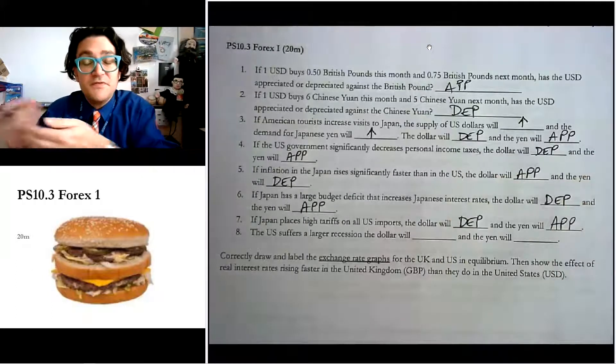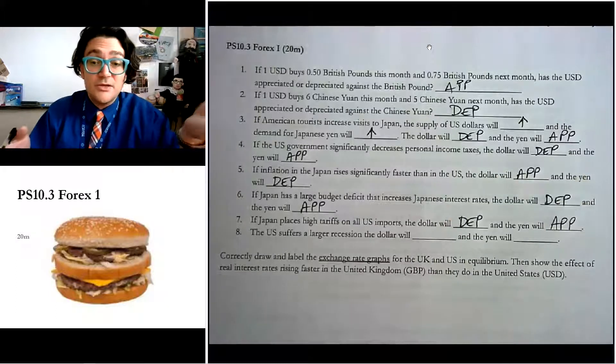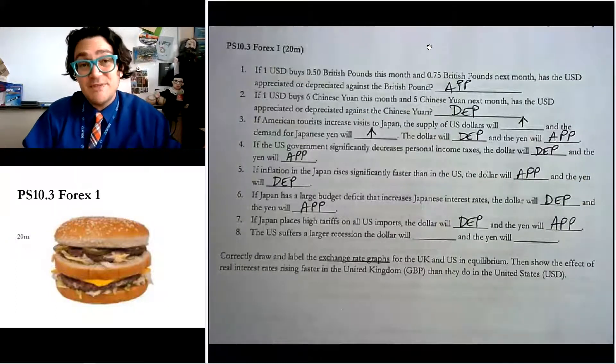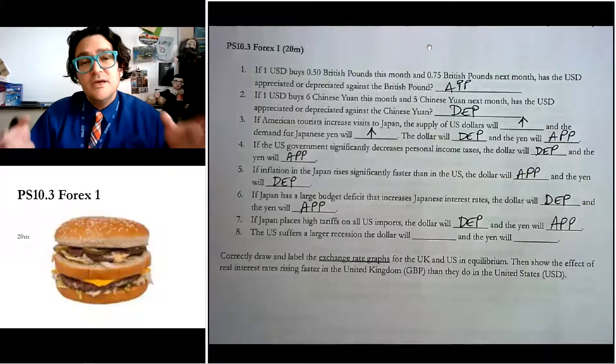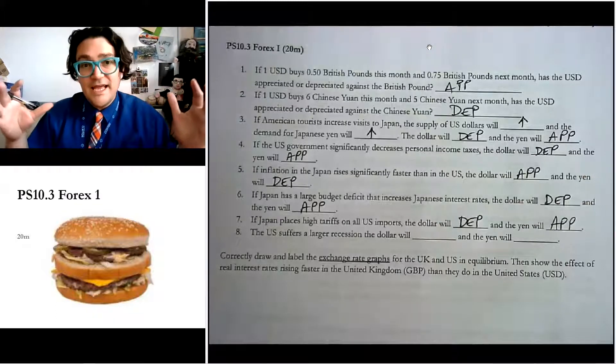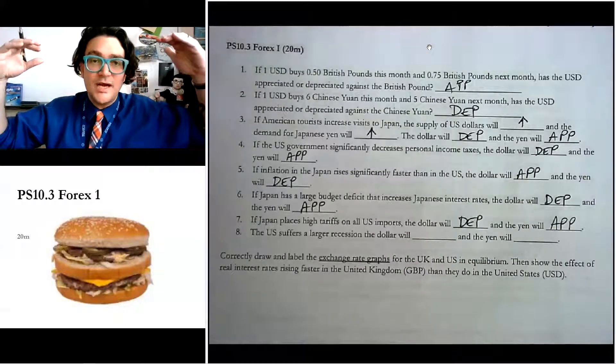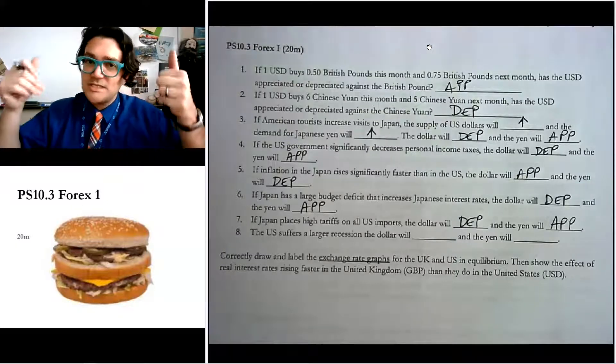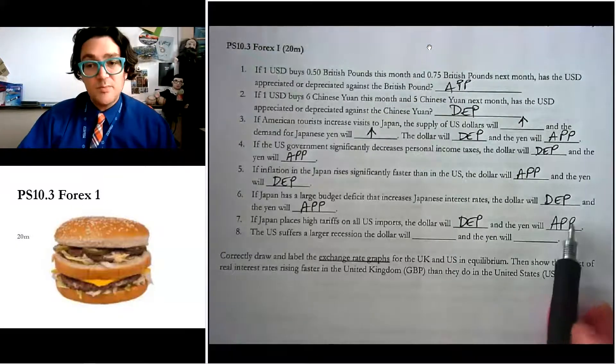And the reason is, is they're not going to supply as many yen into the foreign exchange market anymore. Japanese people don't want to buy American stuff, so they don't need American dollars. So they're not going to supply as many yen into that market. When the supply of the yen contracts, then the price of the yen goes up. The supply decreases, price goes up. So the yen is going to appreciate.